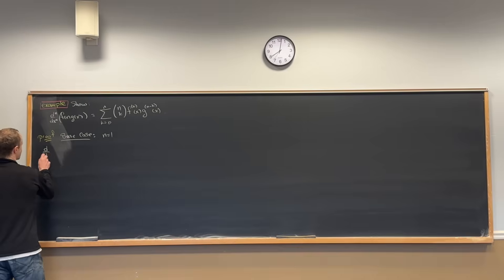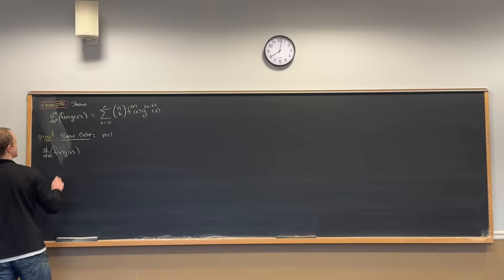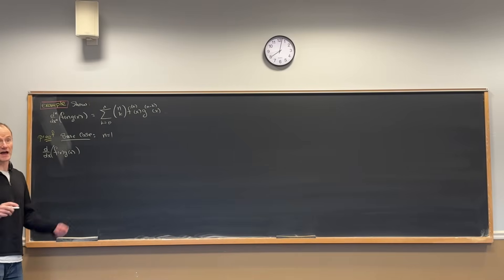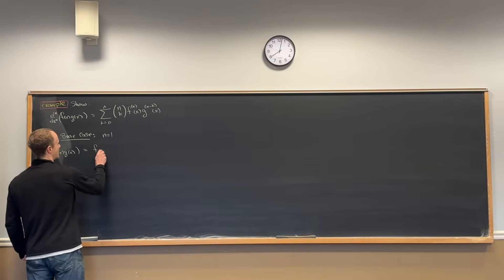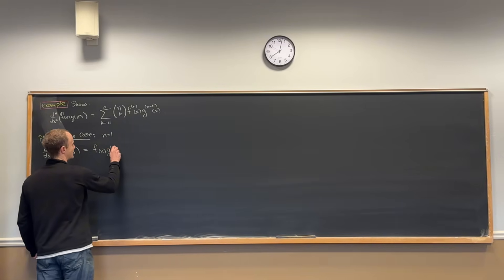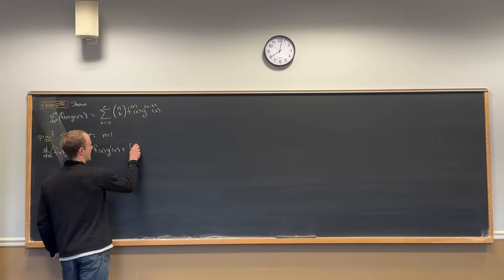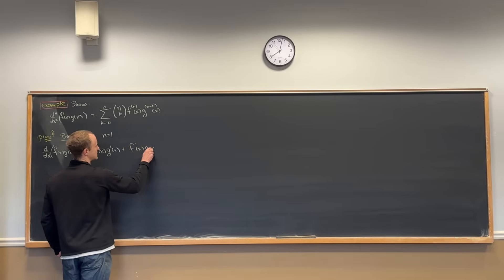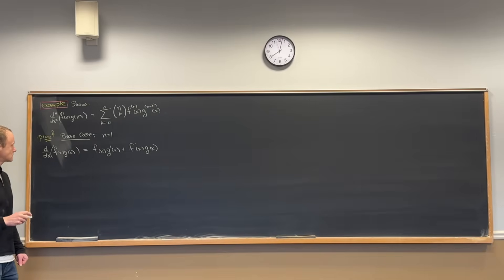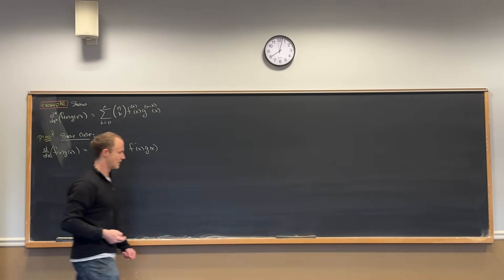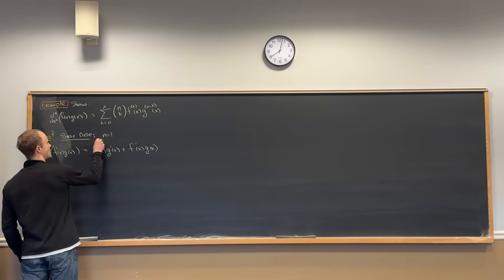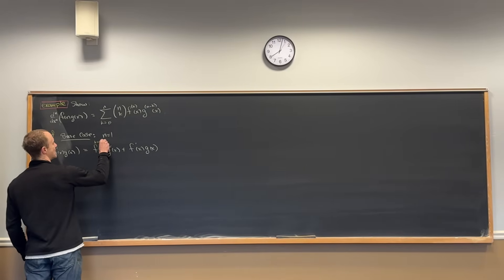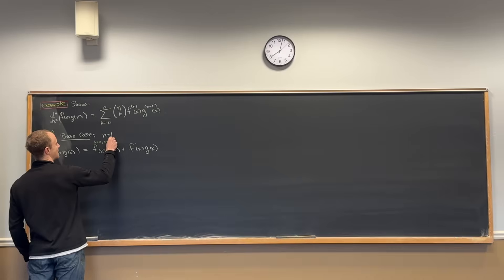So that means we're going to take the derivative with respect to x of f(x) times g(x). We all know what that is from calculus: that's going to be f(x) times g'(x) plus f'(x) times g(x). Check it out — this is k equals 0 and then n minus k equals 1.